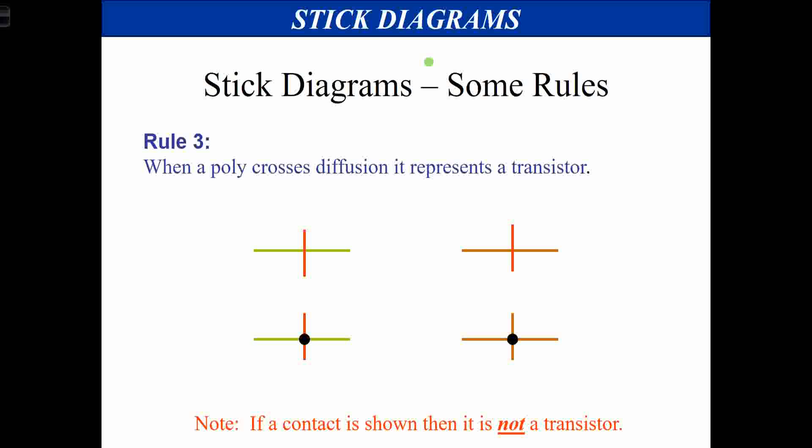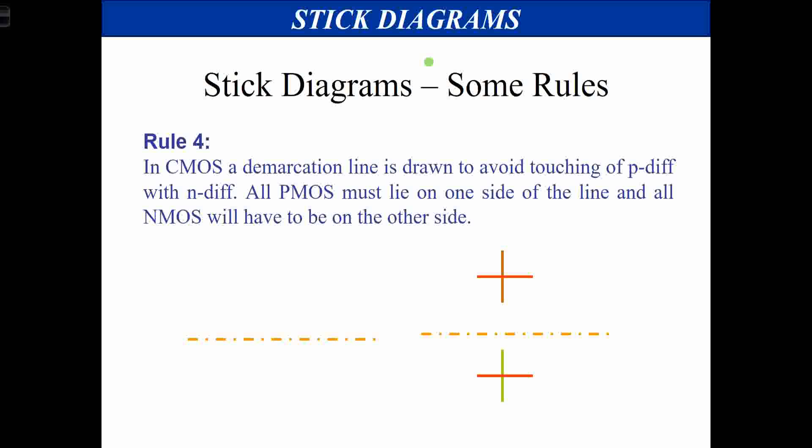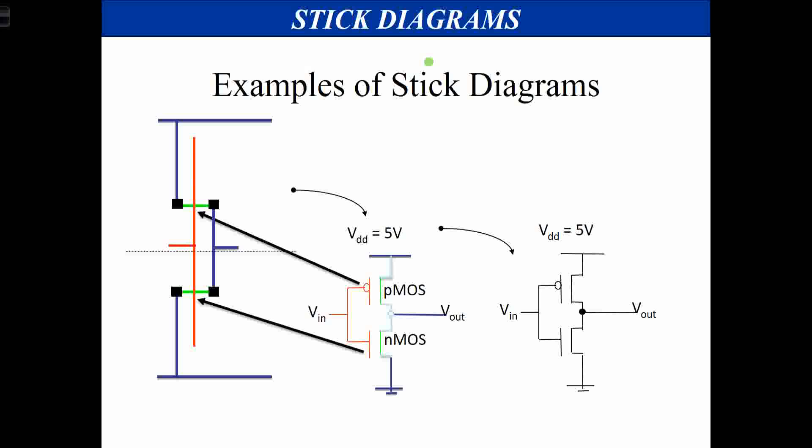Polysilicon crossing diffusion forms a transistor — an N-type transistor uses N diffusion, and a P-type transistor uses P diffusion crossed by polysilicon. If you make a contact cut at the polysilicon-diffusion crossing, it is no longer a transistor — it is simply a wire connection. Rule four: in CMOS, a demarcation line is drawn between P diffusion and N diffusion to separate pull-up and pull-down transistors.